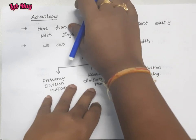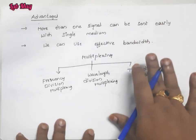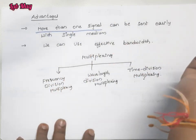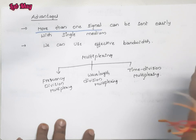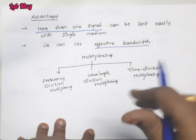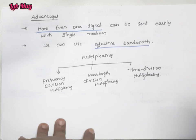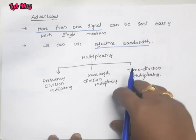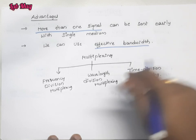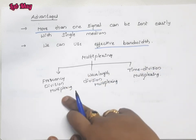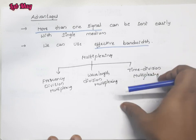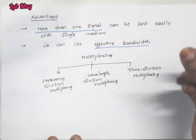The main advantage of multiplexing is that we can transmit more than one signal effectively within a bandwidth — this is called effective bandwidth utilization. There are three types of multiplexing: Frequency Division Multiplexing (FDM), Wavelength Division Multiplexing (WDM), and Time Division Multiplexing (TDM). We also use the multiplexer and demultiplexer concept in all these types.